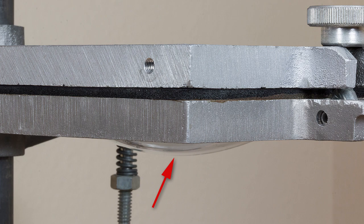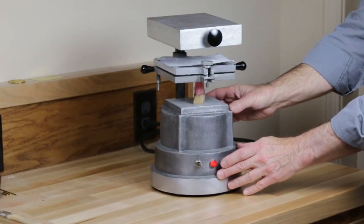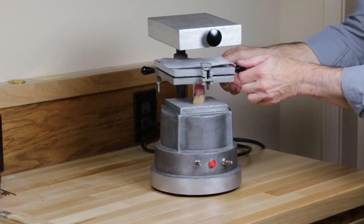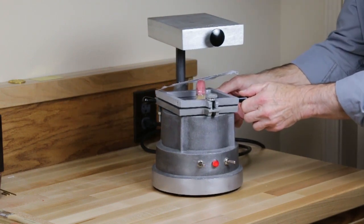A good rule of thumb is that when the material slumps even with the frame, it's soft enough to form. Very thin material will not slump as much. When the material is soft enough, the vacuum is switched on and the frame is brought down over the form.